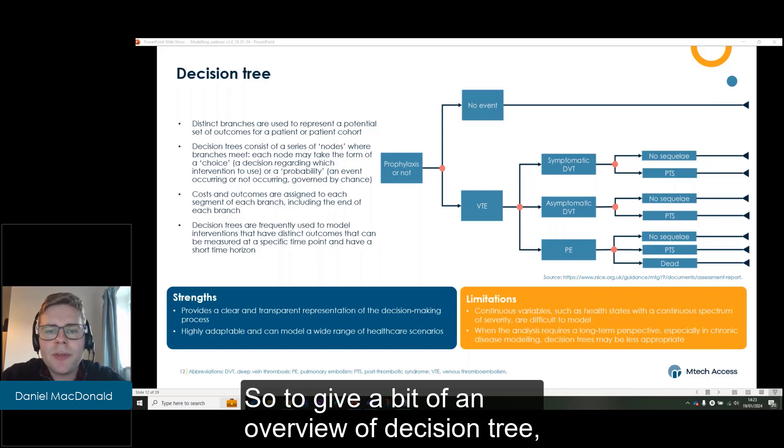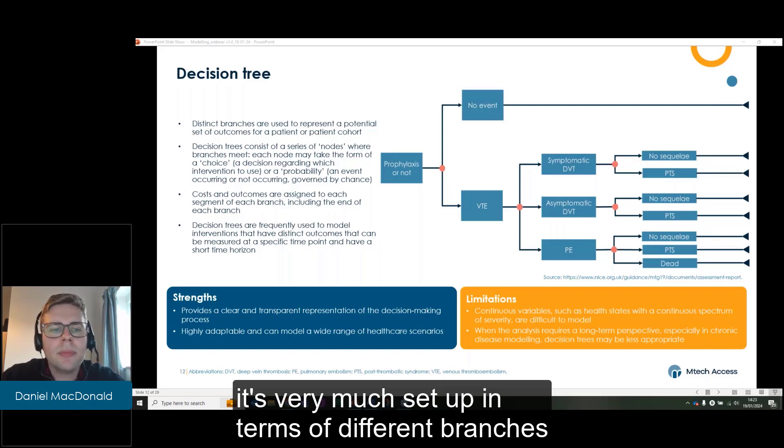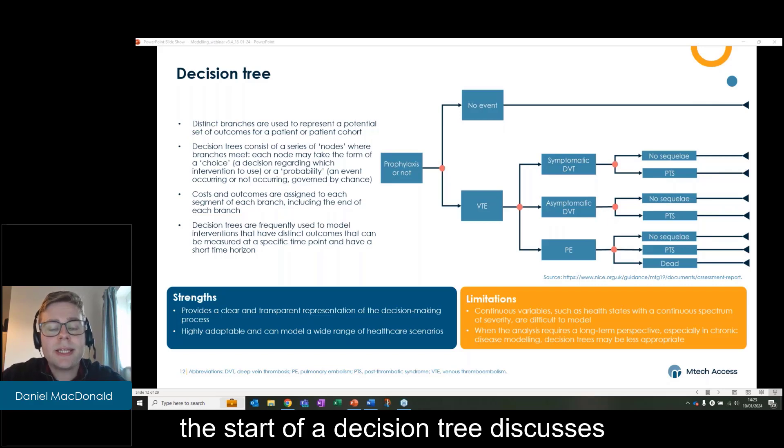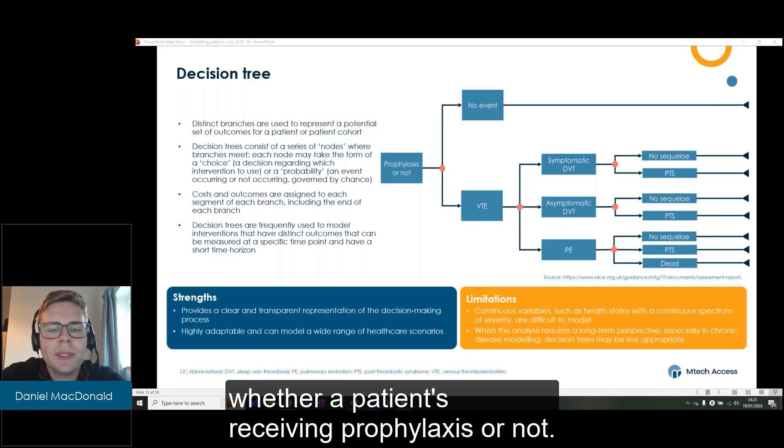To give a bit of an overview of a decision tree, it's very much set up in terms of different branches modeling discrete events. So we've got a diagram here. Starting off, the start of a decision tree discusses whether a patient's receiving prophylaxis or not.